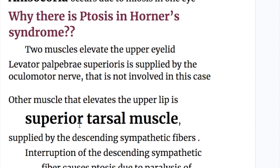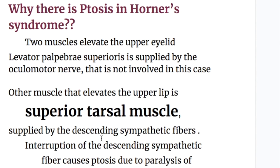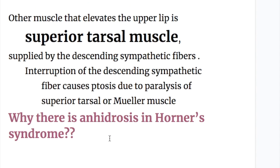Ptosis occurs in Horner's syndrome because two muscles elevate the upper eyelid. The levator palpebrae superioris is supplied by the oculomotor nerve and is not involved in this case. The other muscle that elevates the upper eyelid is the superior tarsal muscle, supplied by the descending sympathetic fibers. Interruption of these fibers causes ptosis due to paralysis of the superior tarsal muscle, or Müller's muscle.